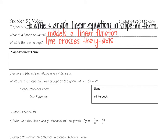Before we can do anything in this lesson, we have to know what slope-intercept form is. It's an equation written just like this: y equals mx plus b, where m is the slope of your line and b is your y-intercept.